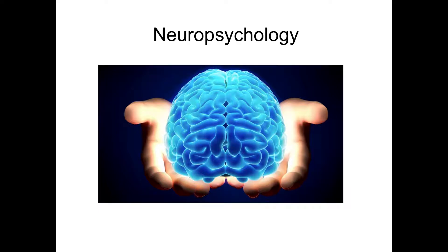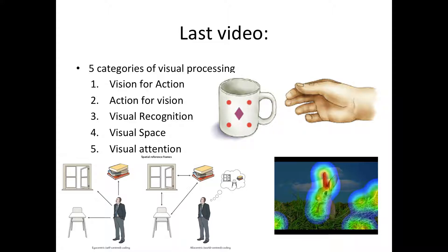Hi everyone and welcome back to neuropsychology. In the last video we talked about the five categories of visual processing: vision for action, how we scan with our eyes to identify objects, visual recognition, visual space to understand the relation between objects and yourself, and visual attention — our brain cannot be attentive to every single stimulus that comes in.